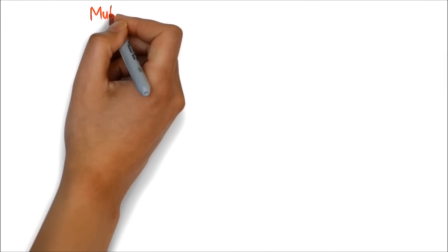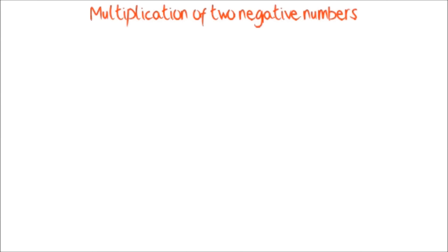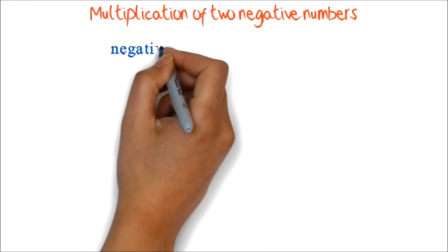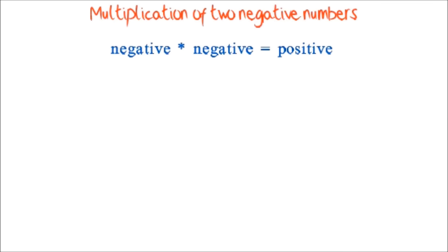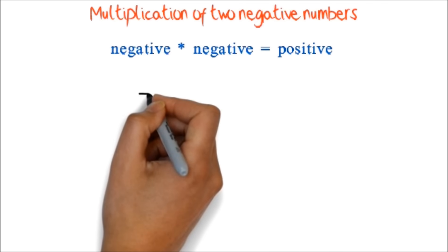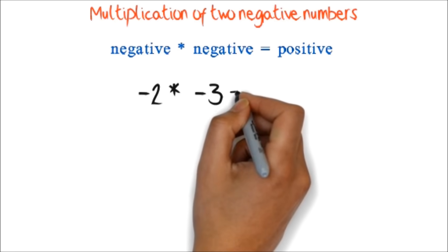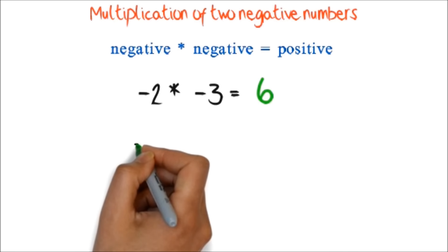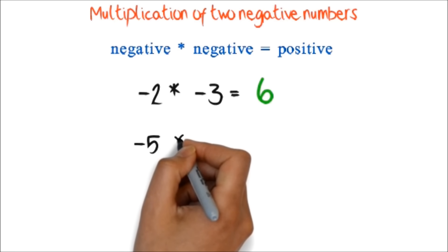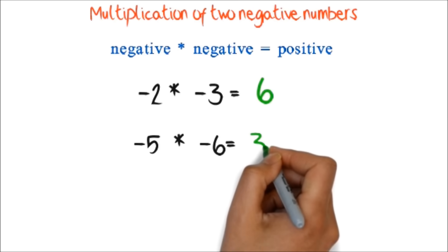Now, let's look at when you multiply two negative numbers. When you multiply two negative numbers, the answer is always positive. So, we say, negative 2 times negative 3 equals 6. And, negative 5 times negative 6 equals 30.